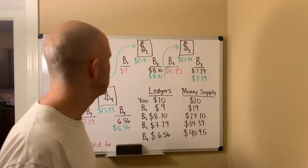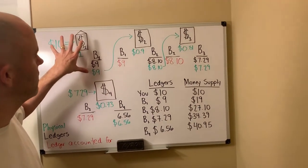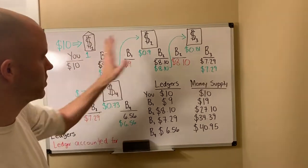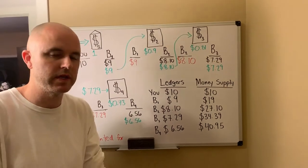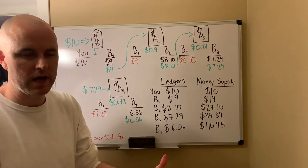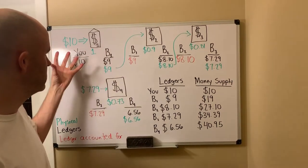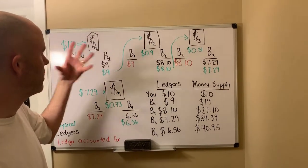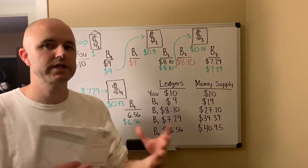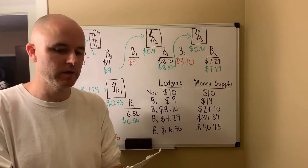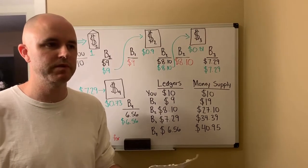So in our first video, what we did was we basically focused on this element of what we have here, which I'll explain in a moment — which is simply what happens when we put ten dollars, ten physical dollars, into a bank and then somebody borrows. So we're going to follow a series of these transactions, but before we get started I'm going to explain my color coordination so that it's easier for you to follow along.